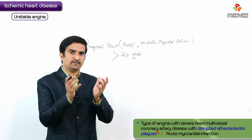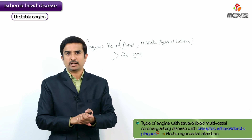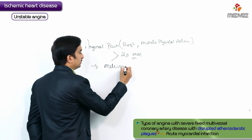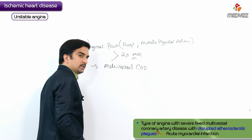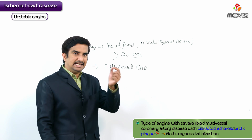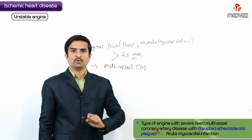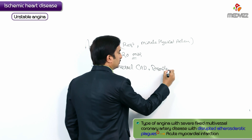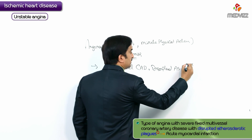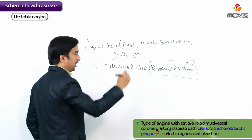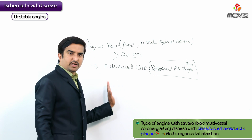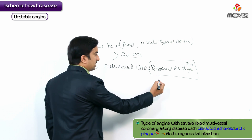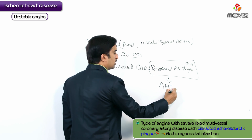The disrupted atherosclerotic plaque is responsible for the development of a thrombus, which blocks the entire diameter of the coronary artery, leading to acute myocardial infarction. The MCQ point to remember: multi-vessel coronary artery disease with disrupted atherosclerotic plaque is the cause of unstable angina.